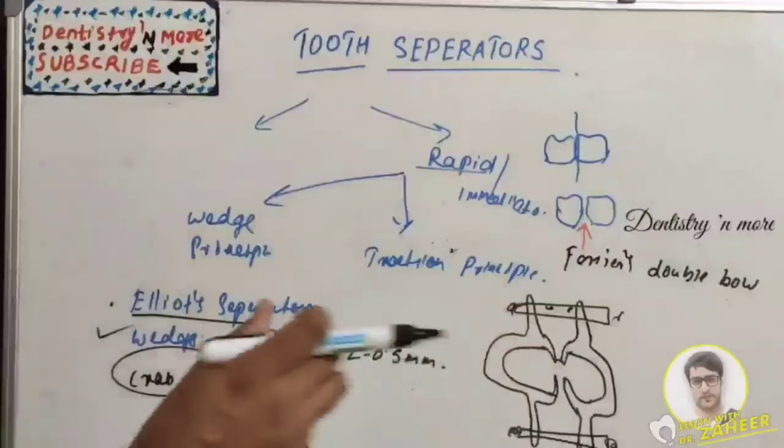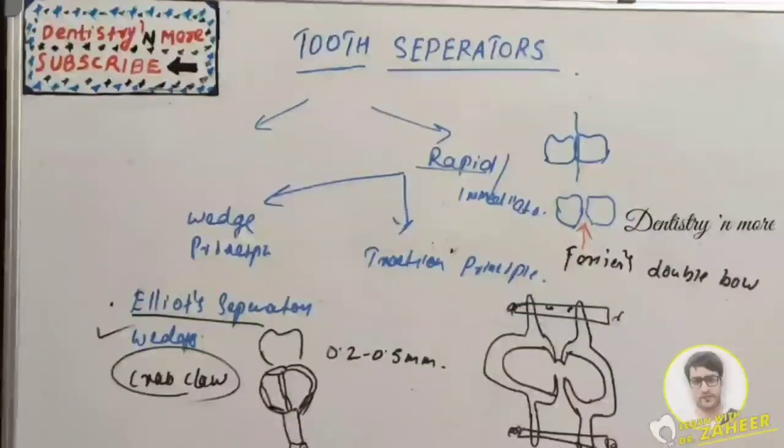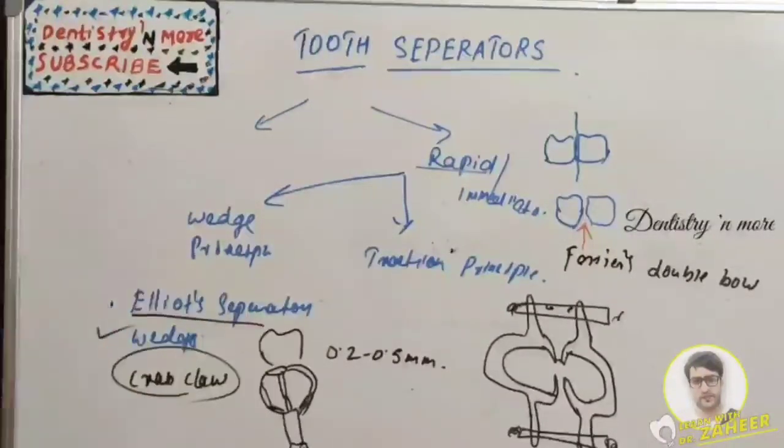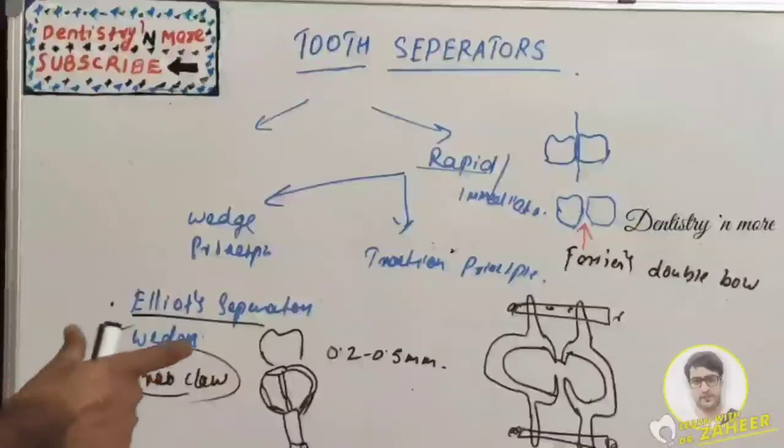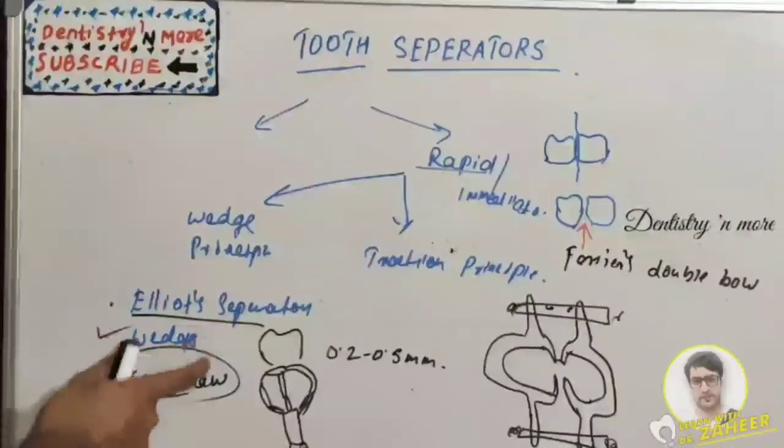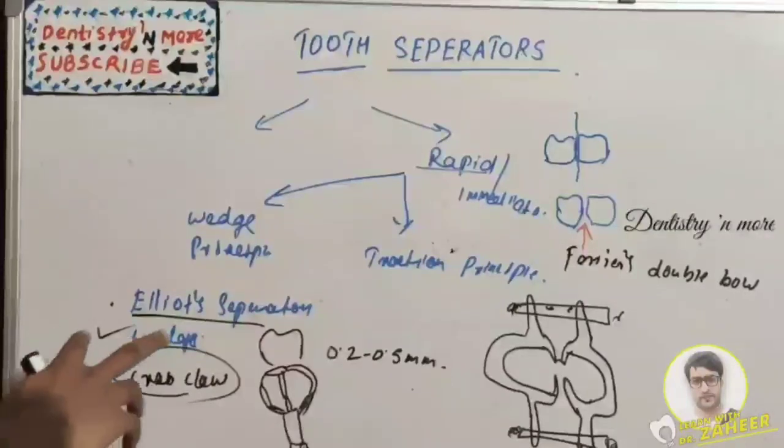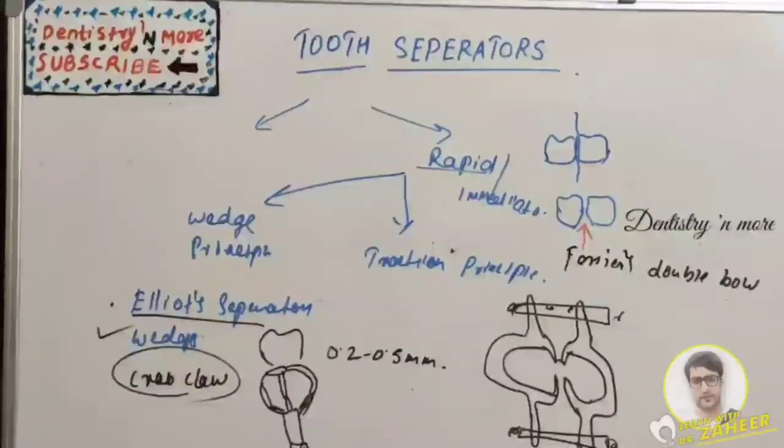That's all about tooth separation. Next video will be about matrices. Details you can see in the previous videos that I explained in detail about the types of wedges and wedging techniques. I'll come up in the next session with matrices. Thank you.